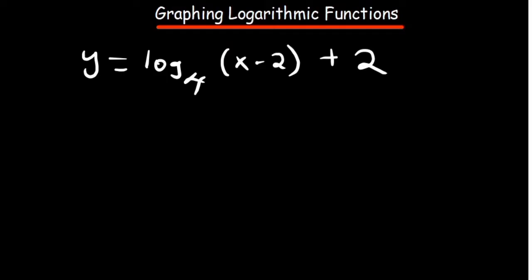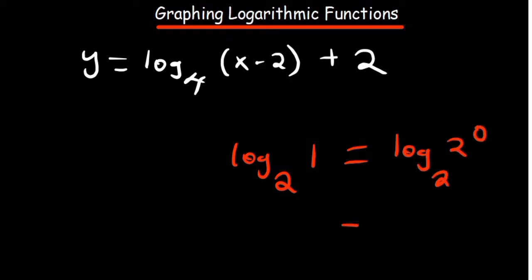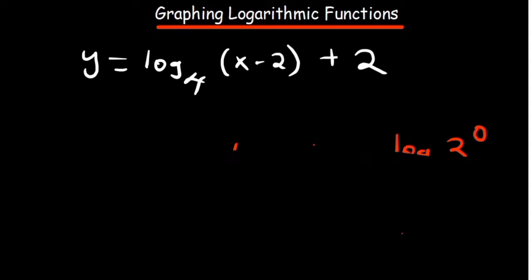The other thing that can help us is the fact that when what's in the brackets is equivalent to 1. Because whenever you have any log with a 1 there, it's basically going to be — you can write this as the base to the power 0 — which is basically going to give us 0. So we know three things that are very important to assist us when sketching. Let's come up with our table of values.